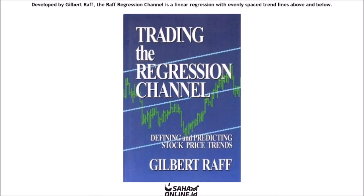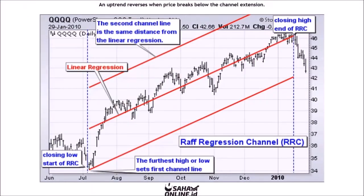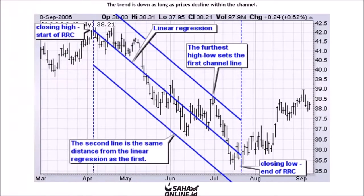Developed by Gilbert Raff, the Raff Regression Channel is a linear regression with evenly spaced trend lines above and below. The width of the channel is based on the high or low that is furthest from the linear regression. The trend is up as long as prices rise within this channel, and an uptrend reverses when price breaks below the channel extension. The trend is down as long as prices decline within the channel, and a downtrend reverses when price breaks above the channel extension.